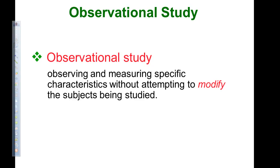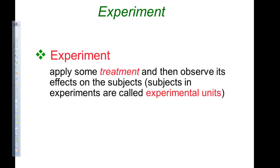An experiment applies some treatment and then observe its effects on the subjects. Subjects in experiments are called experimental units. That's just the people, or the rats, or whatever. The experimental units.